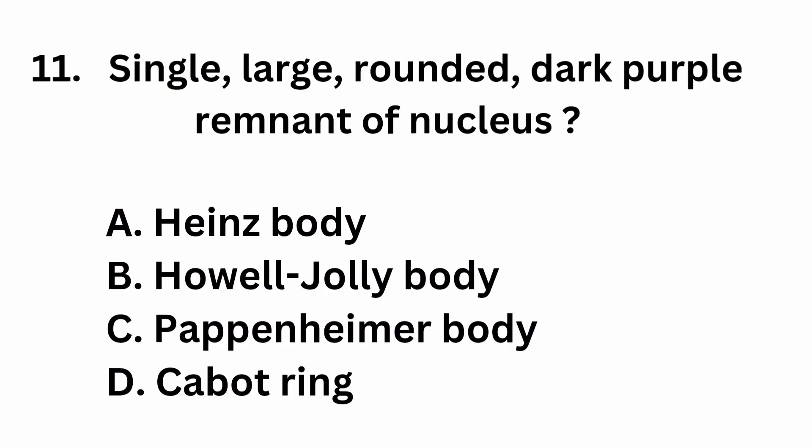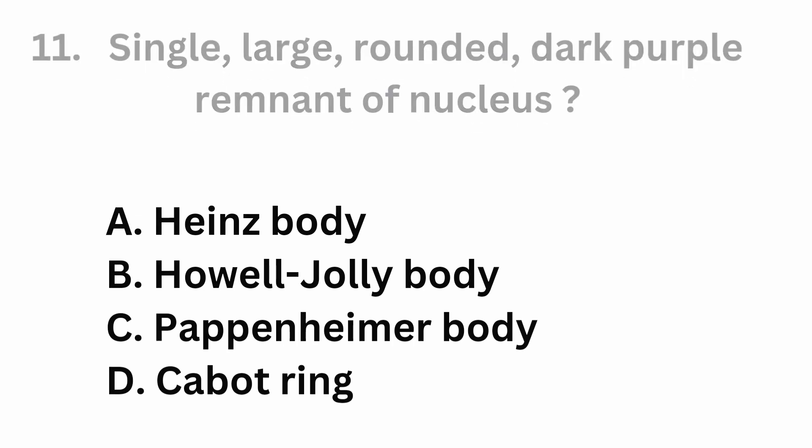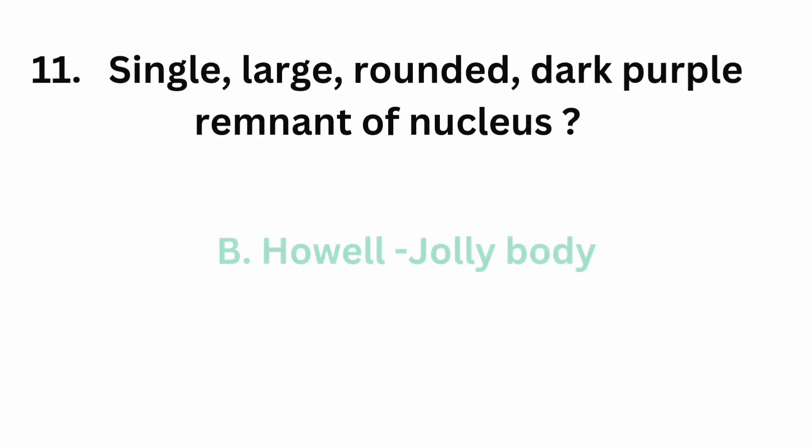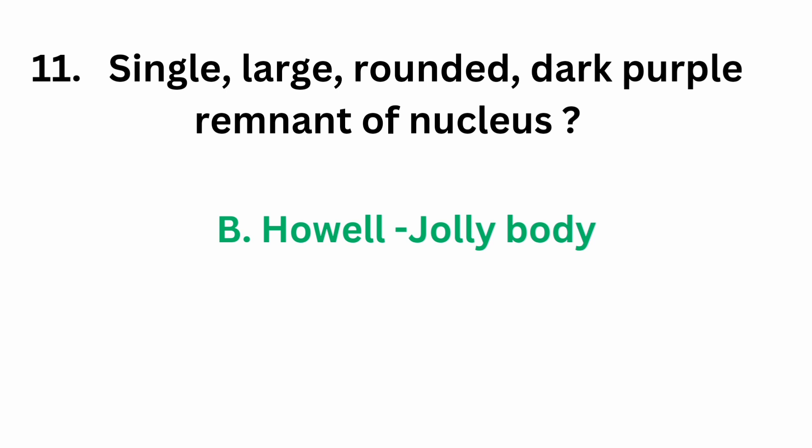Question number 11: single, large, rounded, dark purple remnant of nucleus. Option A, Hen's body. Option B, Howell-Jolly body. Option C, Pappenheimer body. Option D, cabot ring. The correct answer is option B, Howell-Jolly body. This is the remnant of nucleus.